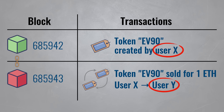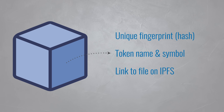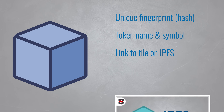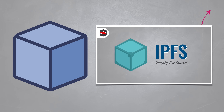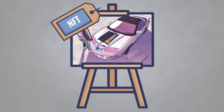The blockchain makes sure that this information can never be tampered with. It also allows you to track who is the current owner of a token and for how much it has been sold in the past. It's important to note that the artwork itself is not stored within the NFT or the blockchain — only its attributes, such as the fingerprint or hash of the file, a token name and symbol, and optionally a link to a file hosted on IPFS.